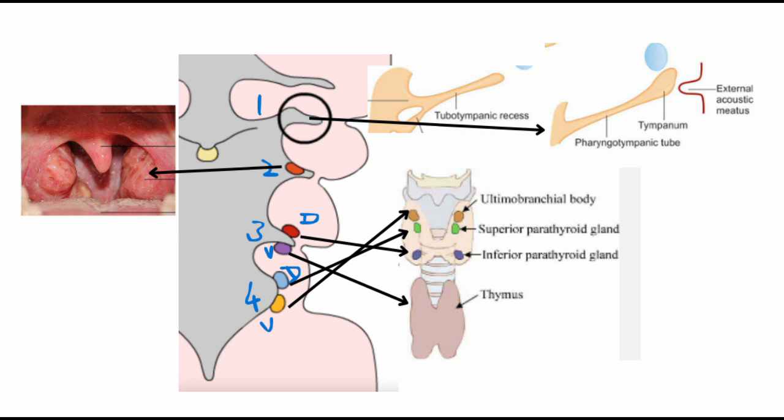Failure of development or descent leads to ectopic glands. The fourth pouch has a dorsal part and a ventral part. From the dorsal part comes the superior parathyroid gland. From the ventral part comes the ultimobranchial body, which gives rise to the parafollicular cells or C cells of the thyroid gland, which are responsible for the secretion of calcitonin, which regulates the calcium pathway.